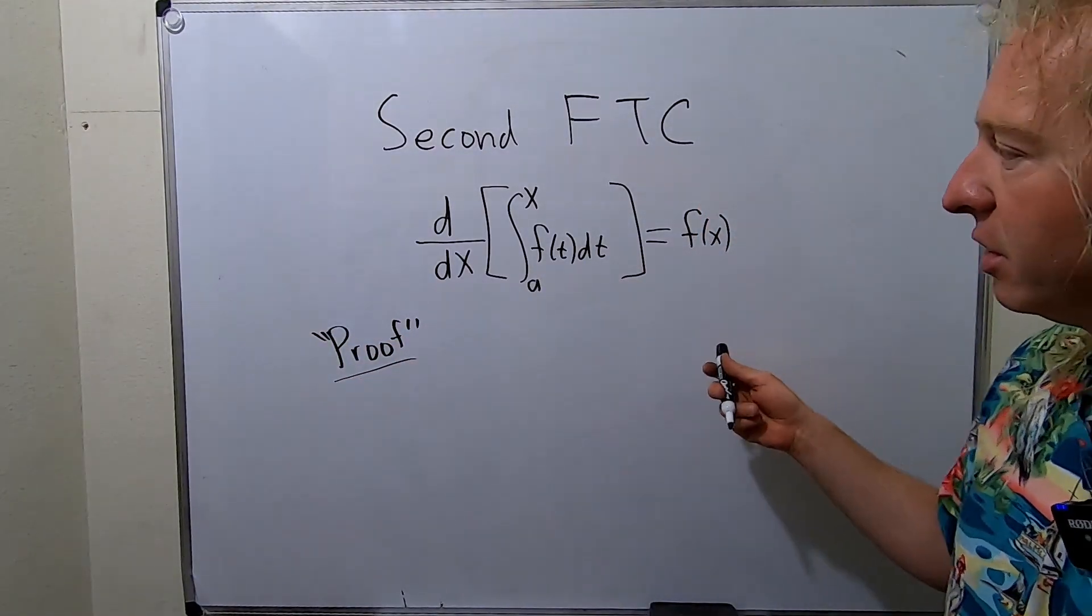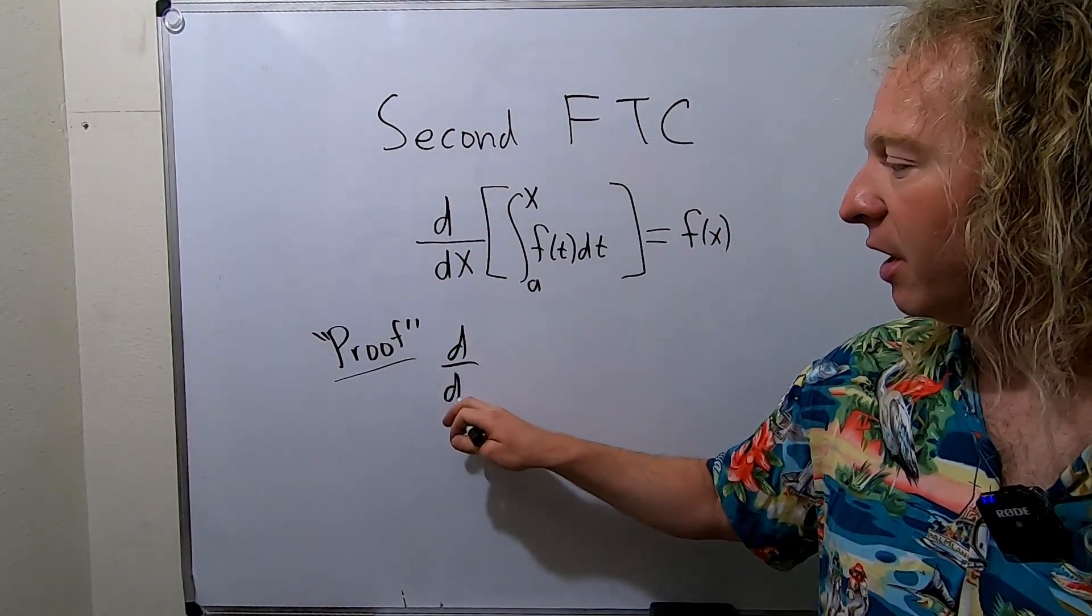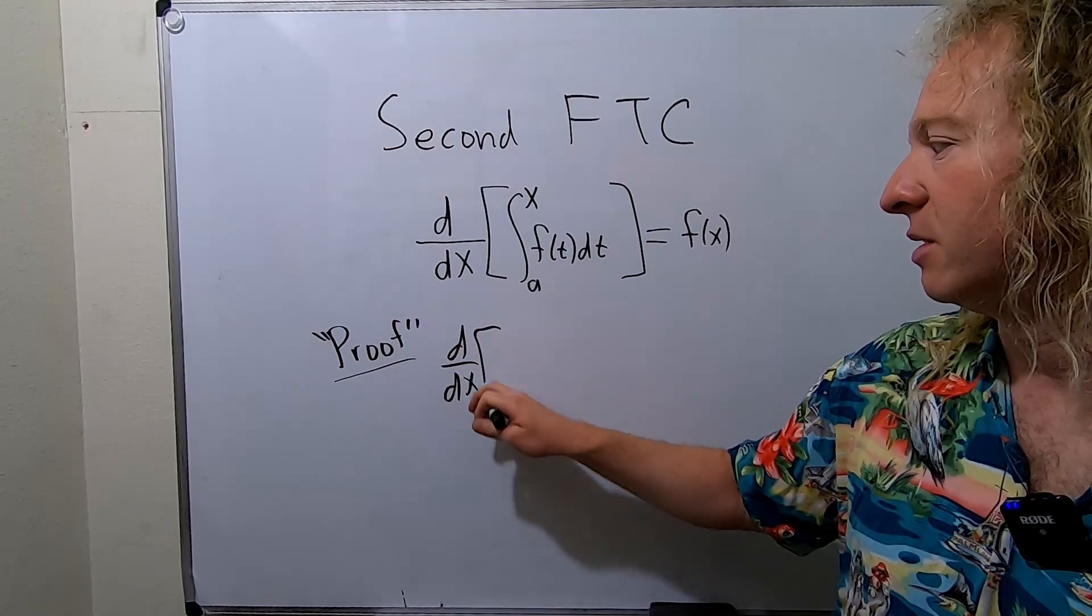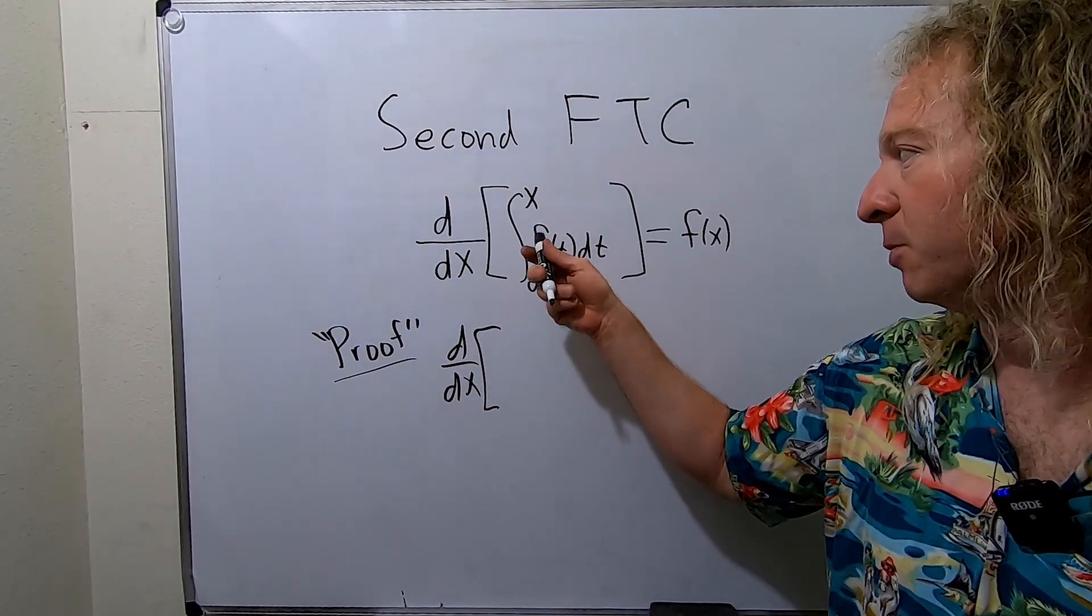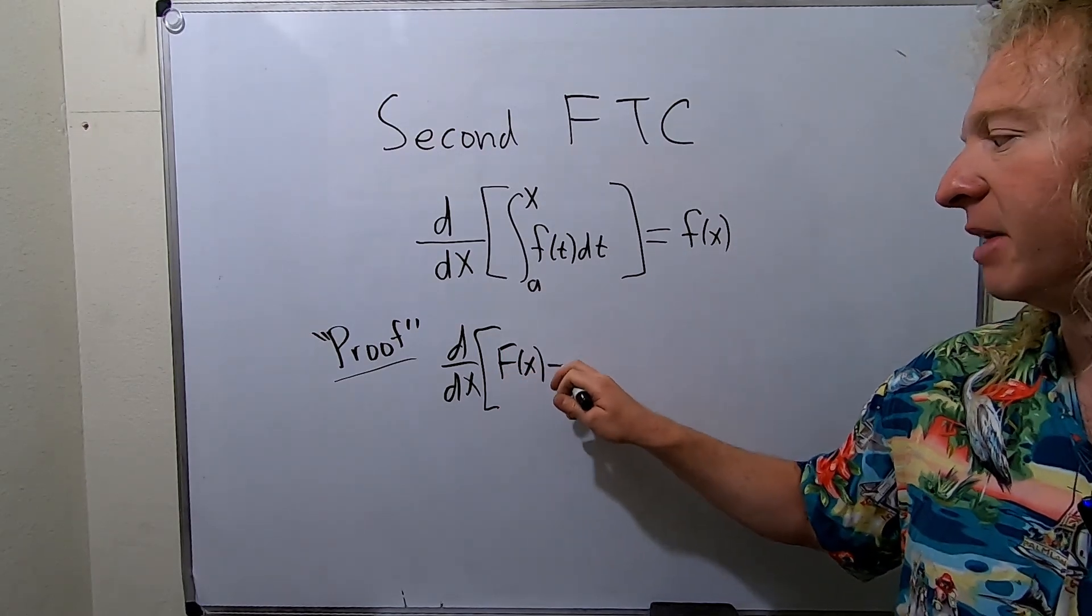So our function is continuous. So what we can do here is we can use what's called the first fundamental theorem of calculus. So this says that this is going to be equal to big F of x minus big F of A.